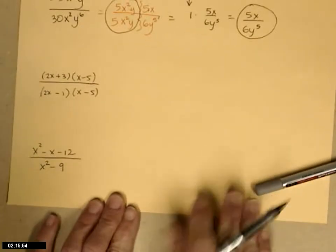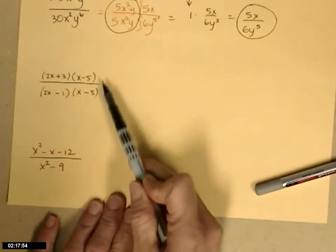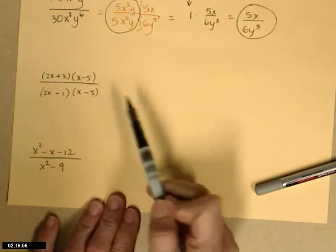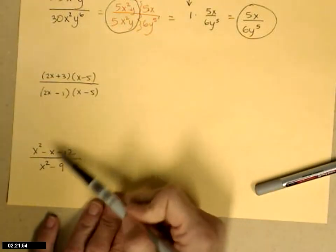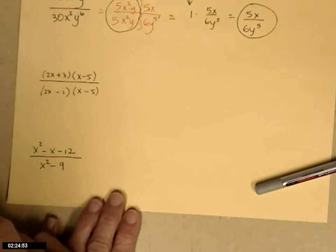Moving down, here I have a rational expression and I have it written out in factored form. That is great, because what I want to look for are common factors. It's important that you look for factors and not terms that are common. Terms don't do us any good.